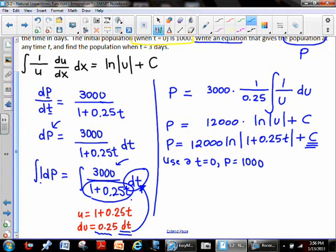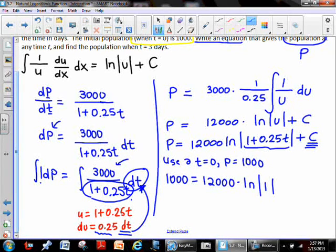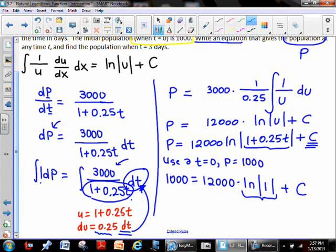We just use the fact that at t equals zero, p is equal to 1000. We would say then that 1000, our population, would be 12,000 multiplied by the natural log of the absolute value of 1 plus 0.25 times 0, which is just going to result in 1. The 0.25 would go away because it's being multiplied by 0. And then our plus c drops down. We would notice that this natural log of 1 is going to become 0, which completely annihilates our 12,000, and it leaves us with a value of c of 1000.